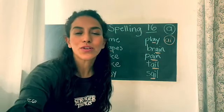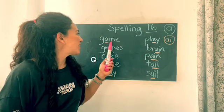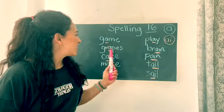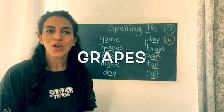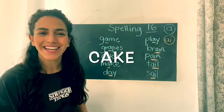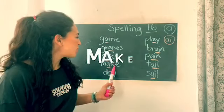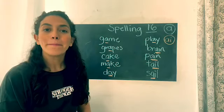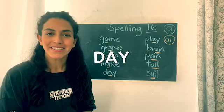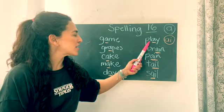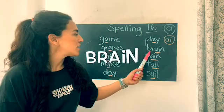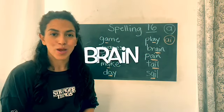Okay, so let's review the list of words. Number one: game. Number two: grapes. Number three: cake. Number four: make. Number five: day. Number six: play. Number seven: brain.